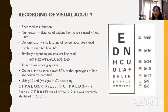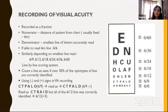What if the patient misses a few letters of a line? For example, if the patient reads up to the CTPALO line but reads O as D, you denote it as six by nine minus one. Suppose he reads CTRAID, but all of the six by 12 line is correctly identified — you denote it as six by 12 plus three.